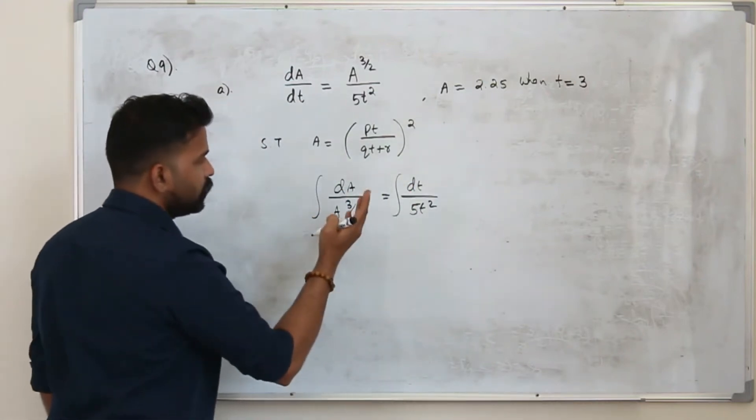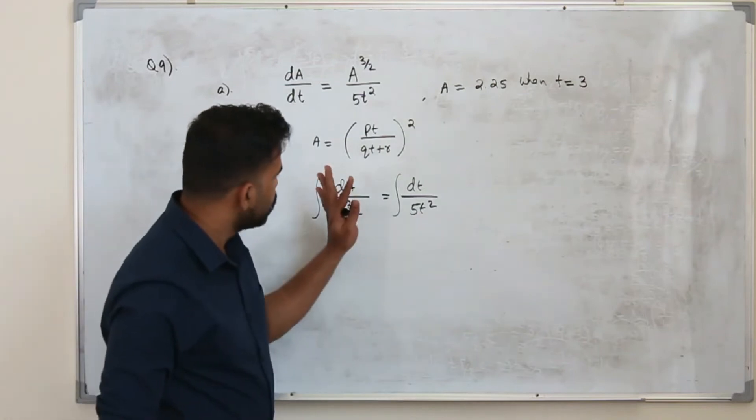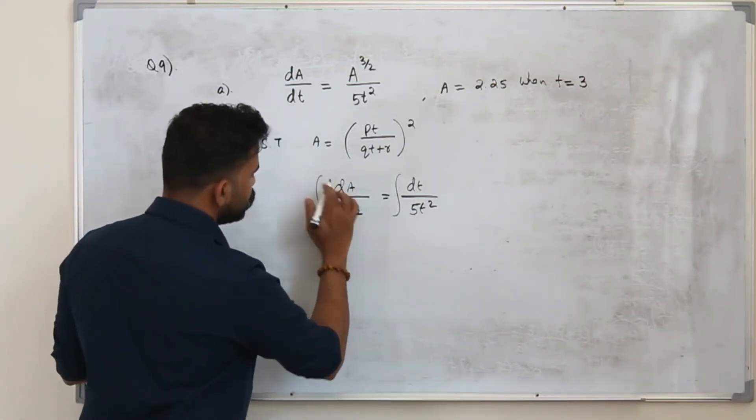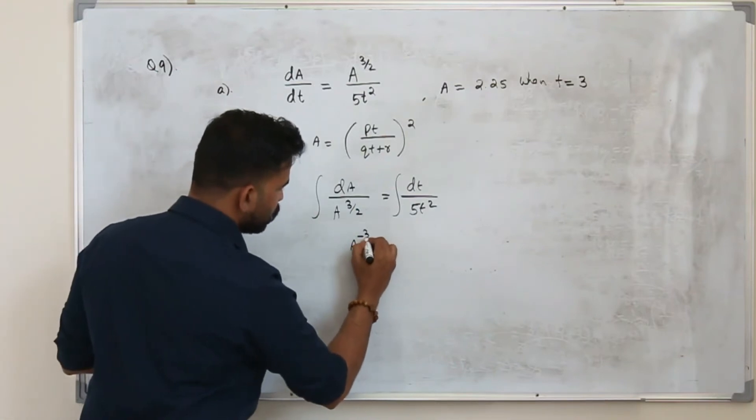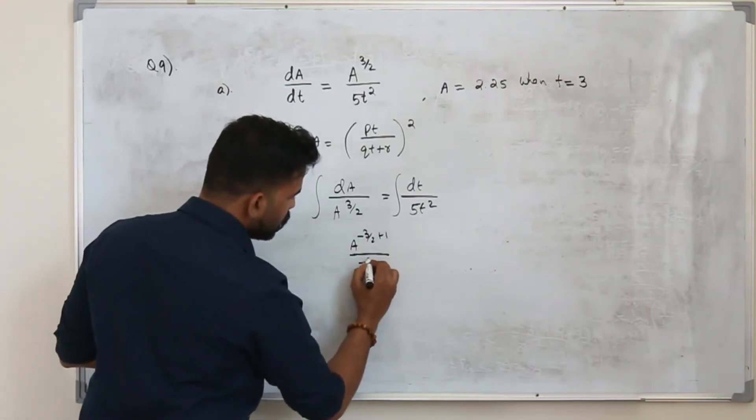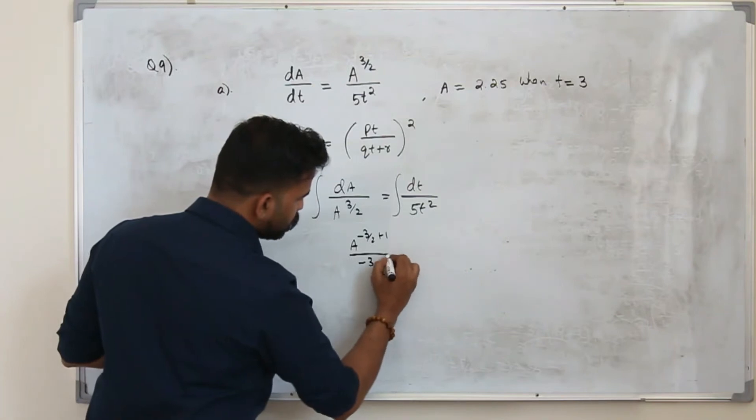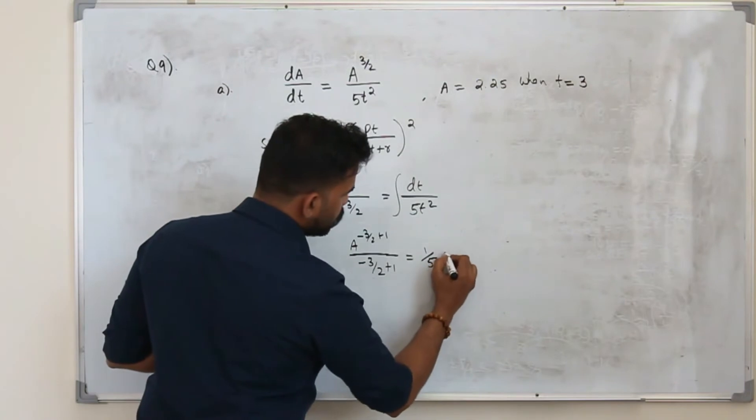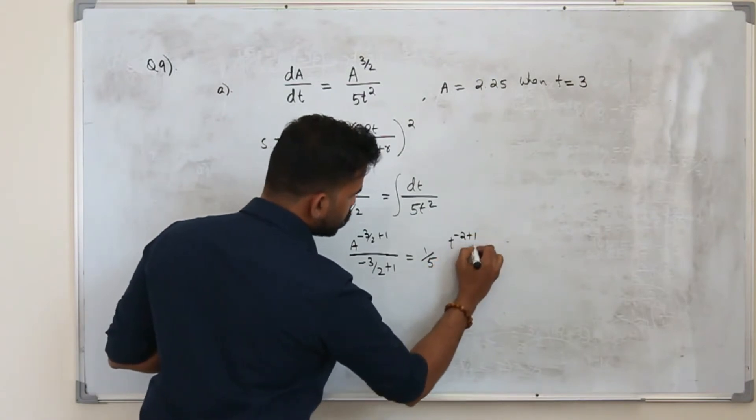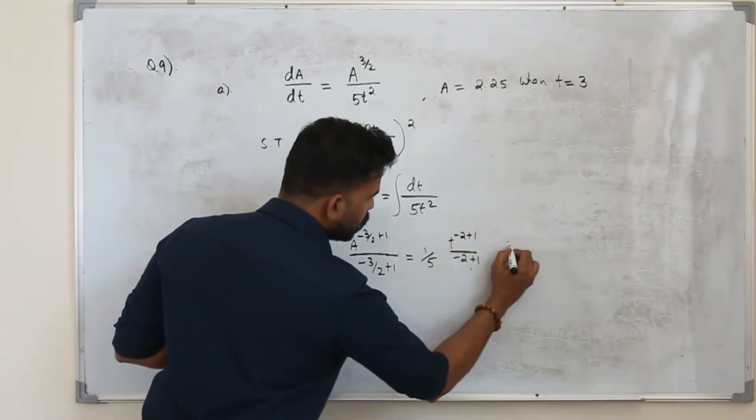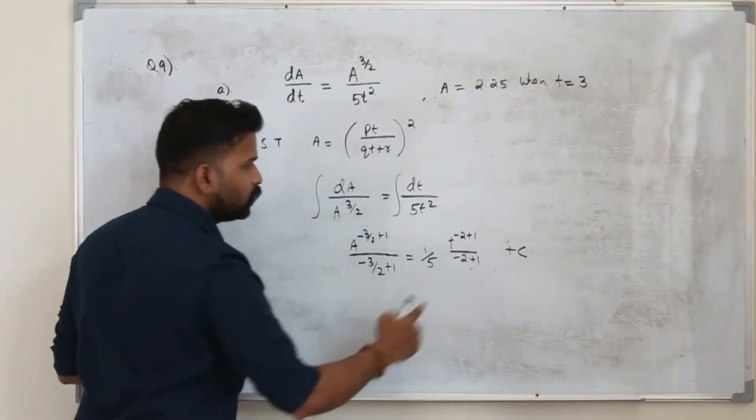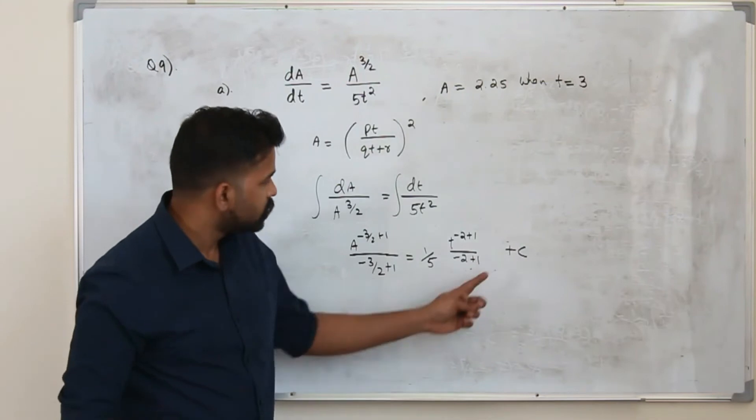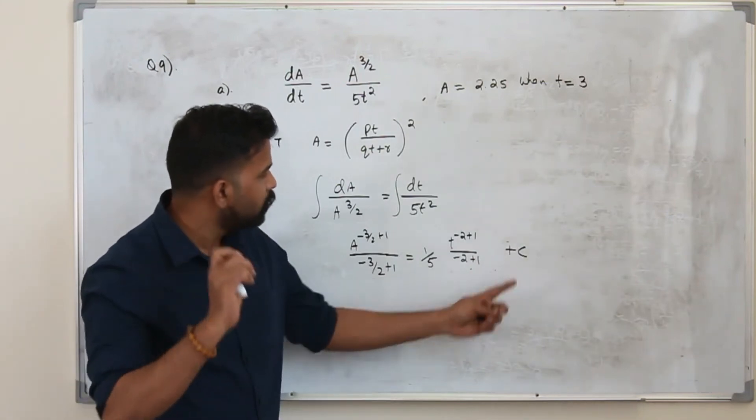When you integrate you will get a to the power minus 3 by 2. So a to the power minus 3 by 2 plus 1 by minus 3 by 2 plus 1 equals 5t to the power minus 2. So t to the power minus 2 plus 1 by minus 2 plus 1 plus c. You don't need to add two plus c plus c. Just when you combine you get another constant. So just add only one plus c.